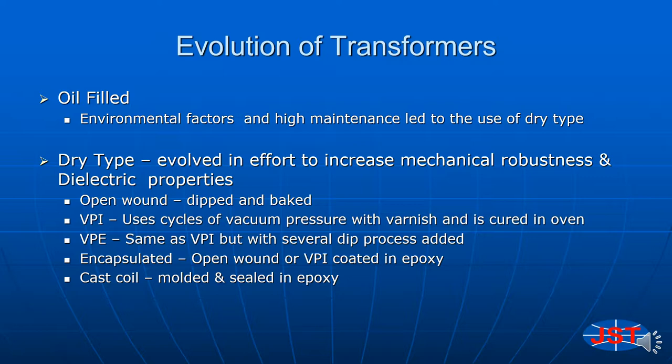When developing dry type transformers, there was a continuous effort to increase the mechanical robustness as well as the dielectric properties of the insulation system. The sequence of dry type transformer development progressed with these improvements in mind. Starting with the open wound construction, dry type transformers were immersed in varnish and baked in ovens to cure the varnish.